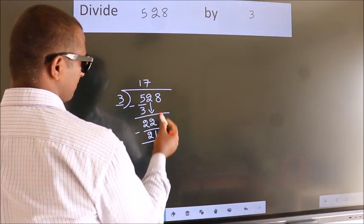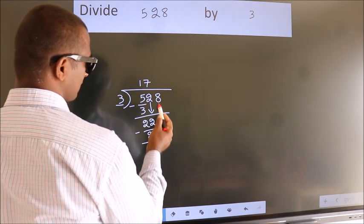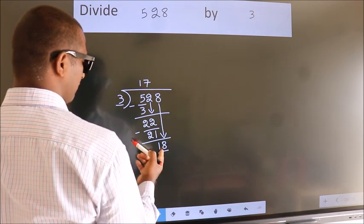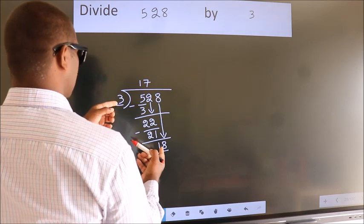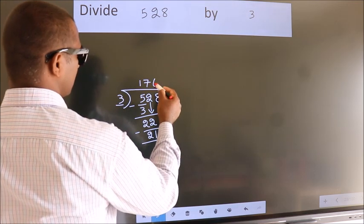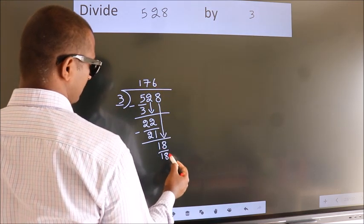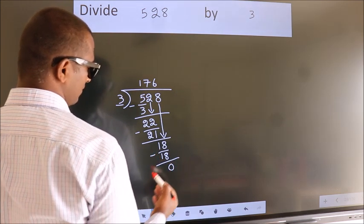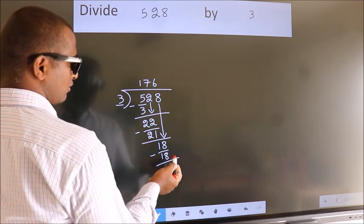After this, bring down the beside number. So 8 down, so 18. When do we get 18? In 3 table, 3 6 18. Now we subtract, we get 0. No more numbers to bring it down.